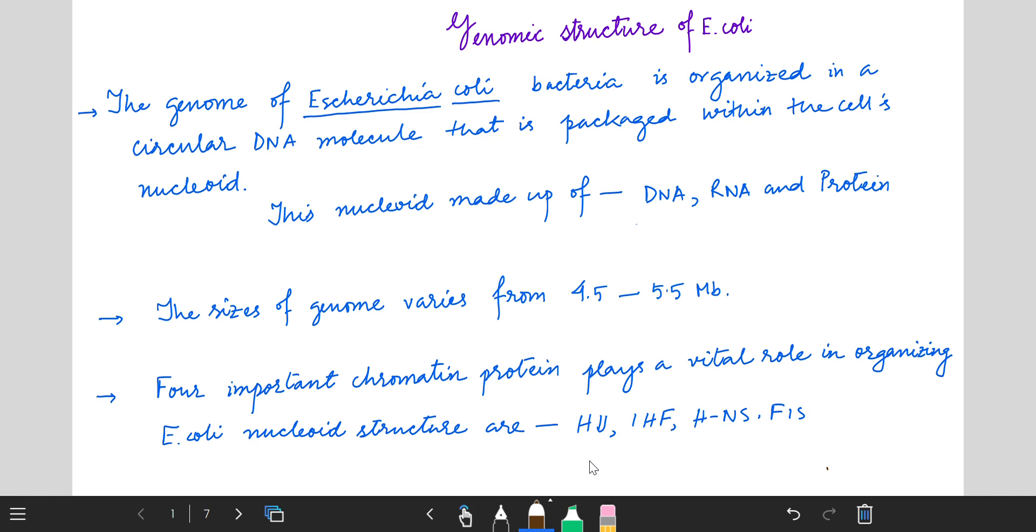This nucleoid is made up of DNA, protein and RNA. DNA is about 80%, RNA is 10% and protein is 10%. The size of this genome varies from 4.5 to 5.5 MB.